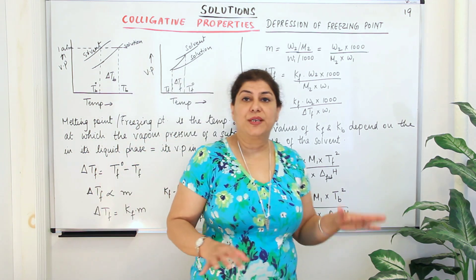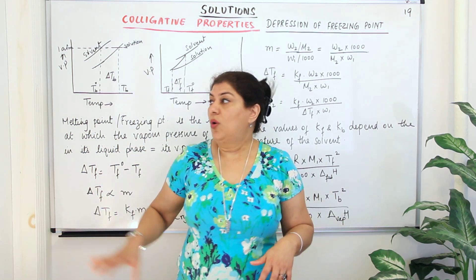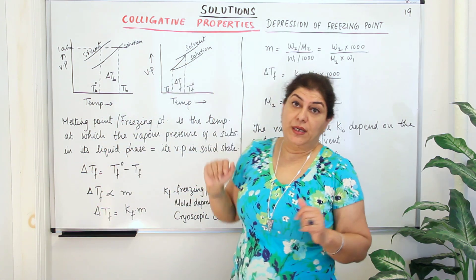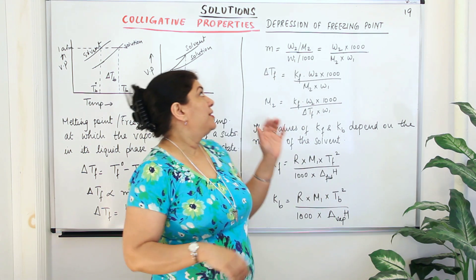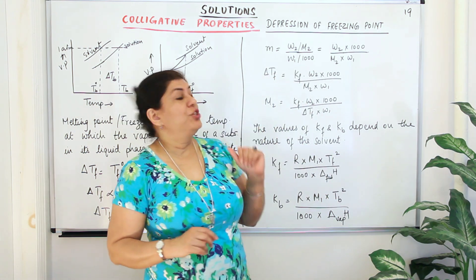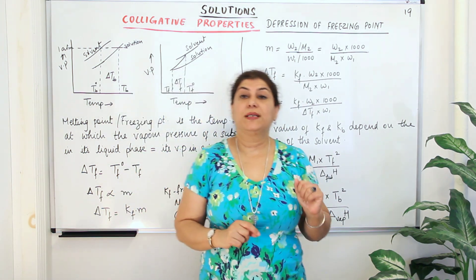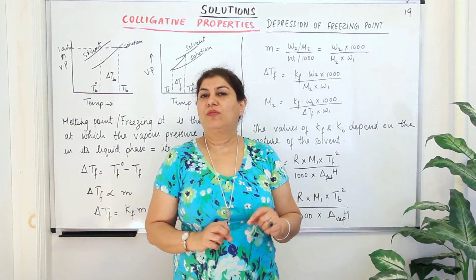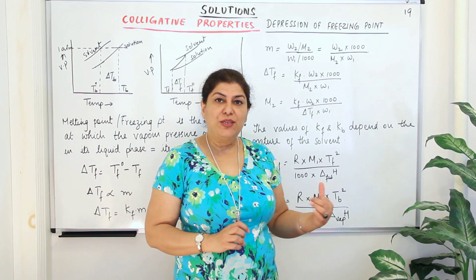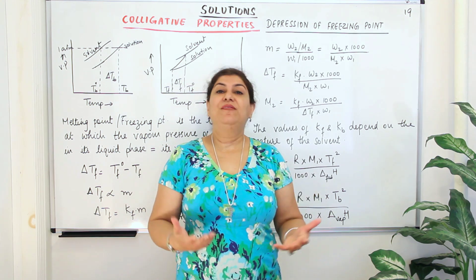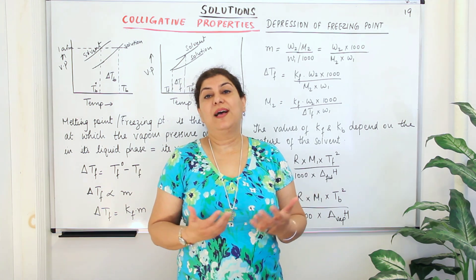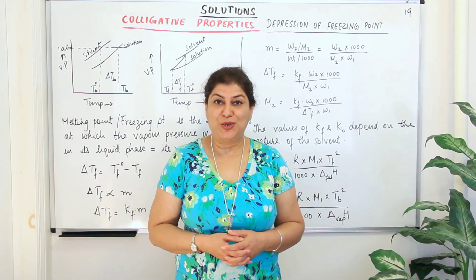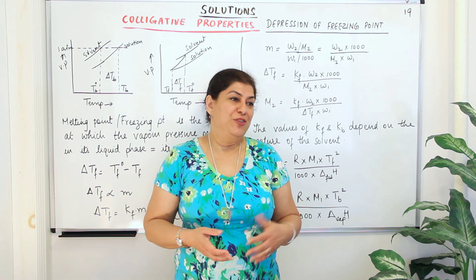That was the theoretical part of this colligative property — the depression in freezing point. In part 20, I'll solve a few problems based on this, and then we move on to the last property, which is osmotic pressure.